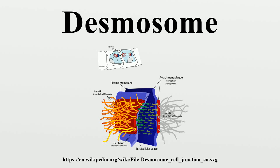On the cytoplasmic side of the plasma membrane, there are two dense structures called the outer dense plaque and the inner dense plaque. These are spanned by the desmoplakin protein. The outer dense plaque is where the cytoplasmic domains of the cadherins attach to desmoplakin via plakoglobin and plakophilin. The inner dense plaque is where desmoplakin attaches to the intermediate filaments of the cell.